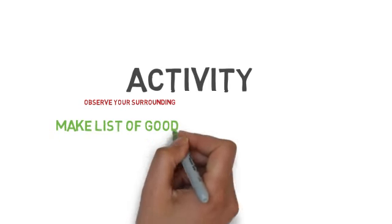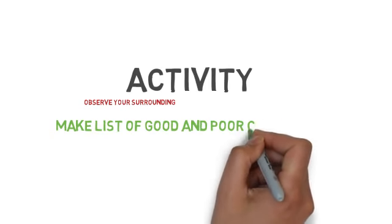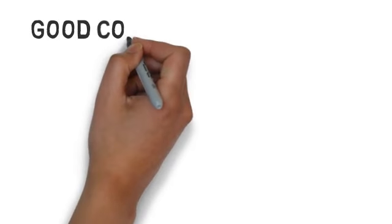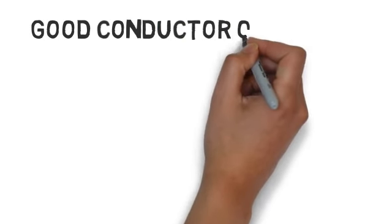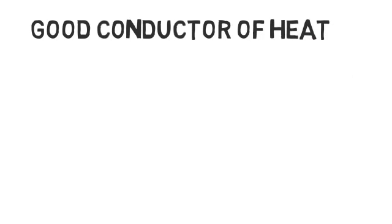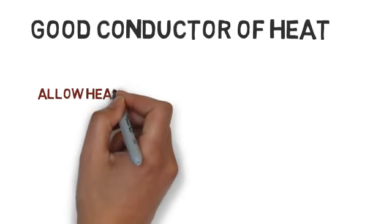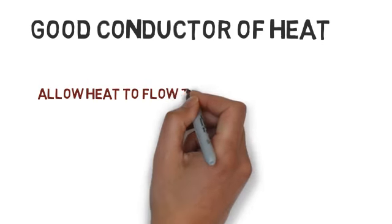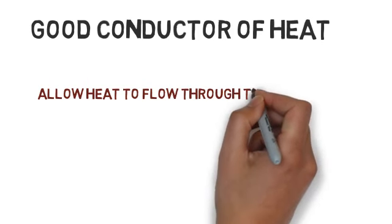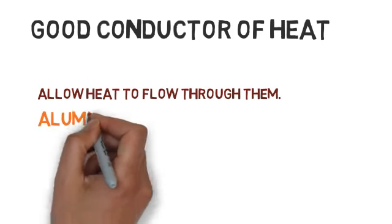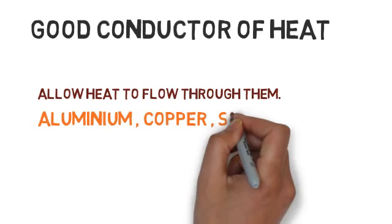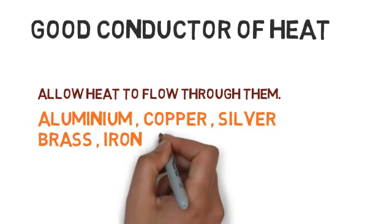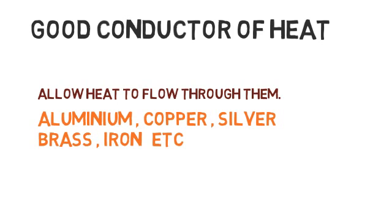The activity for this week is to observe your surroundings carefully and make a list of good and poor conductors of heat. Some materials allow heat to flow through them and are known as good conductors of heat, such as aluminum, copper, silver, brass, and iron. You can observe your surroundings to find good conductors of heat yourself.